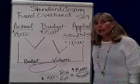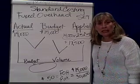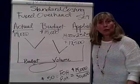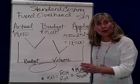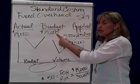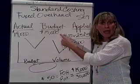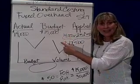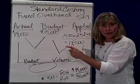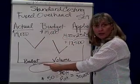When we're looking at fixed overhead, the two variances we're going to find are the budget variance — how much did fixed overhead actually cost versus its budget. When we talk about budget here, we're talking about whether it's the master budget or the flexible budget. Fixed is fixed, so actual versus budget is known as the budget variance.